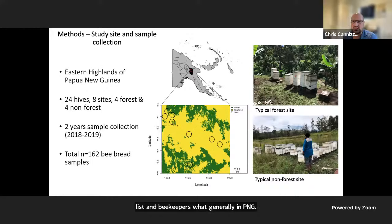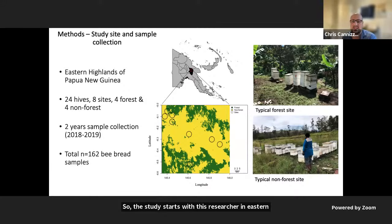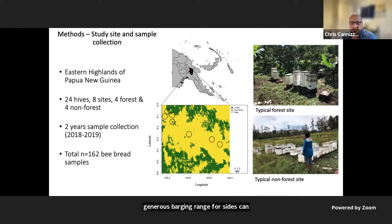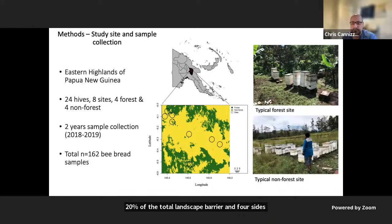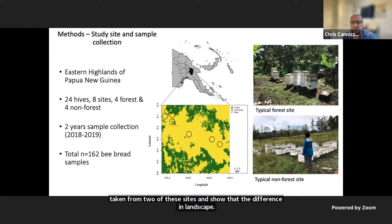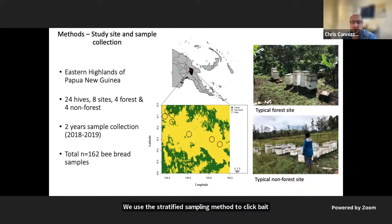The study sites are in the eastern highlands of Papua New Guinea. We selected eight sites in total, based on the presence and absence of forest within a two-and-a-half kilometer radius of each hive site to capture a generous foraging range. Four sites contained forest above 20% of the total landscape area, and four sites contained no forest within that radius. We used a stratified sampling method to collect bee bread from frames in hives over two seasons, providing a total of 162 samples.